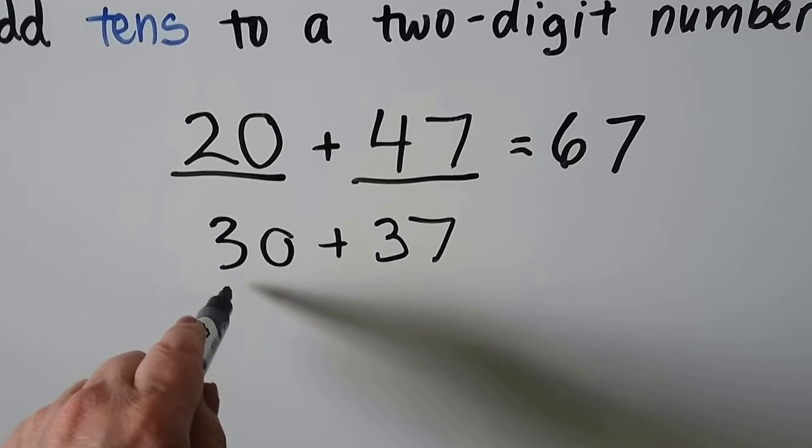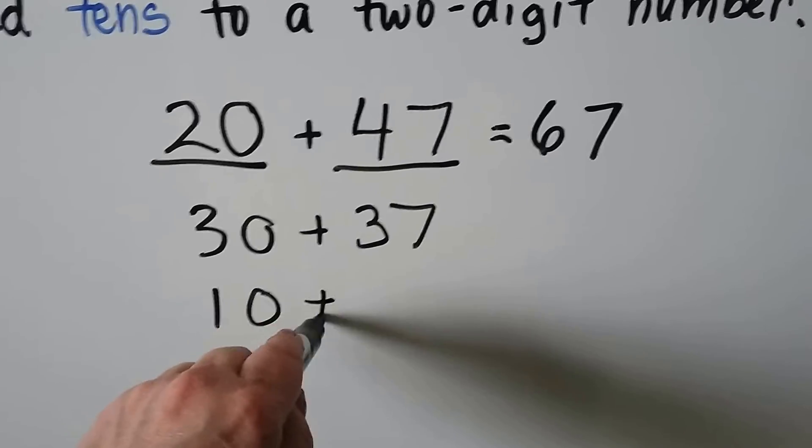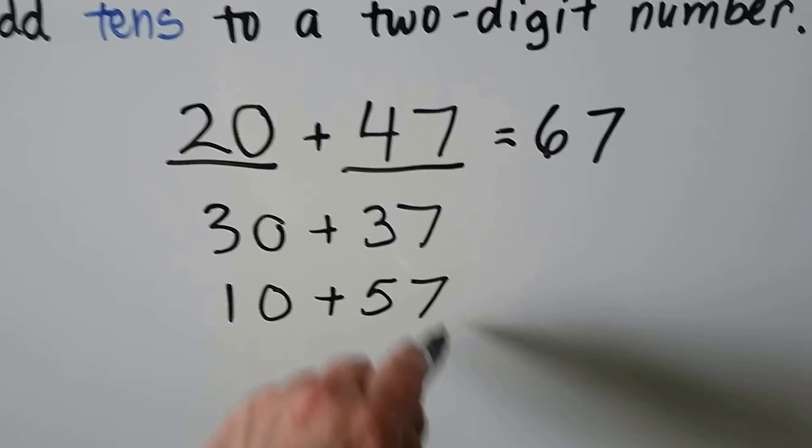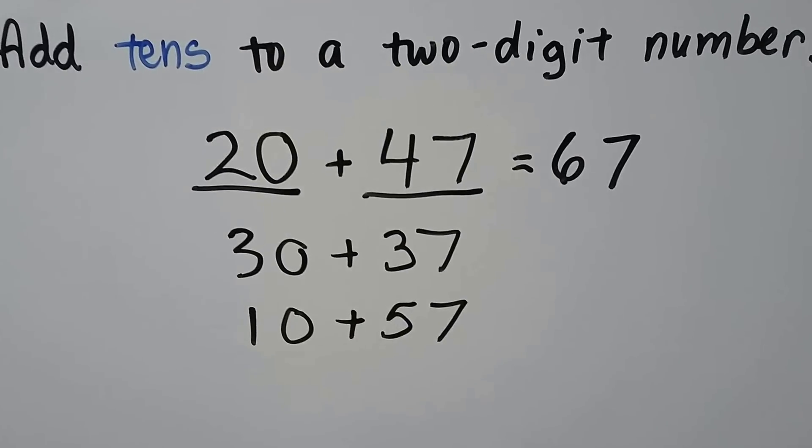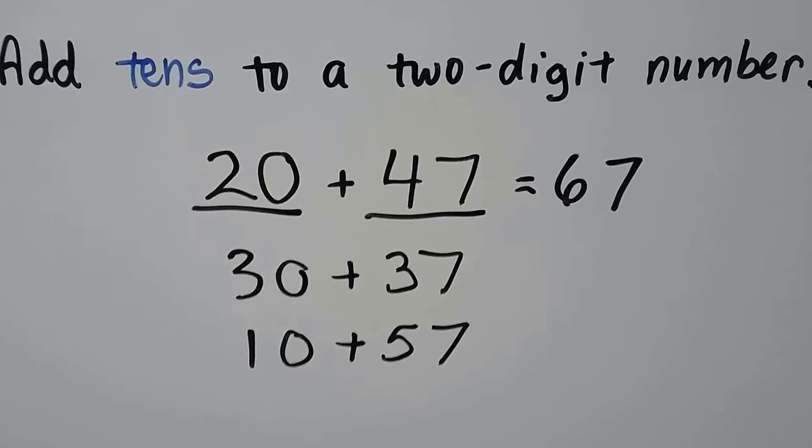We could do 10 plus 57. That would be adding a 10 to a 2-digit number. And that would equal 67 and make it true.